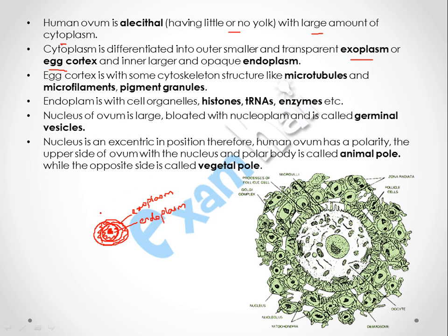The exoplasm (egg cortex) contains cytoskeletal structures including microtubules, microfilaments, and pigment granules. The endoplasm (inner part) contains cell organelles like histones, tRNAs, and enzymes. The nucleus of the ovum is called the germinal vesicle, and its position is eccentric — not exactly in the center. Therefore, the human ovum has polarity: the upper side with the nucleus and polar body is called the animal pole, while the opposite side is called the vegetal pole.